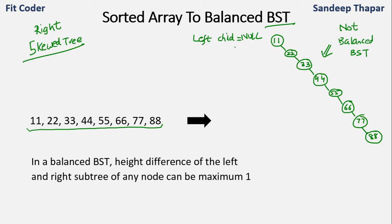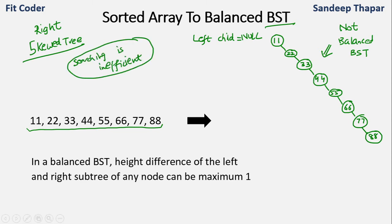The problem with these kinds of trees is that searching is not very efficient. If you have to find node 88, you'll have to traverse the entire tree. The BST is usually created when searching needs to be efficient, so a skewed tree defeats the purpose of creating the BST. We want to create a balanced binary search tree out of these sorted array elements.